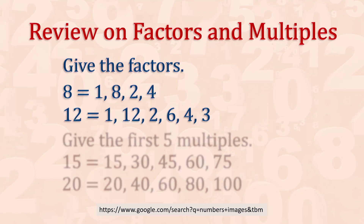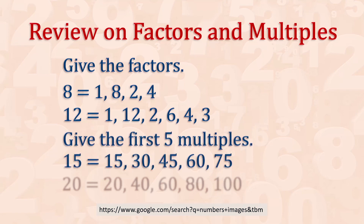Next, give the first 5 multiples. The first 5 multiples of 15 are 15, 30, 45, 60, and 75. Next, 20. The first 5 multiples of 20 are 20, 40, 60, 80, and 100. Very good.